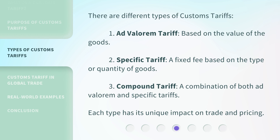There are different types of customs tariffs. First, the ad valorem tariff, which is based on the value of the goods. Second, the specific tariff, a fixed fee based on the type or quantity of goods. Third, the compound tariff, a combination of both ad valorem and specific tariffs. Each type has its unique impact on trade and pricing.